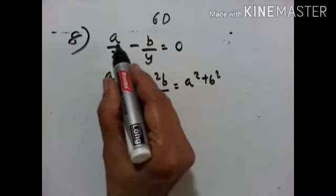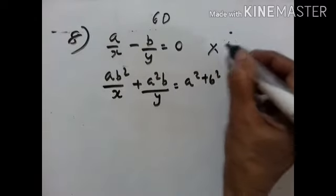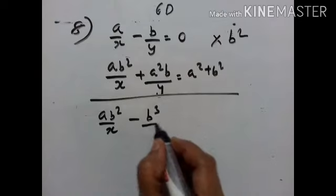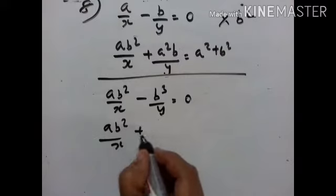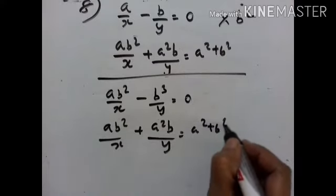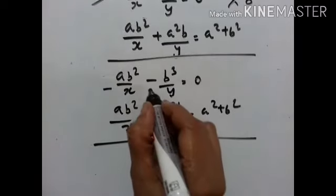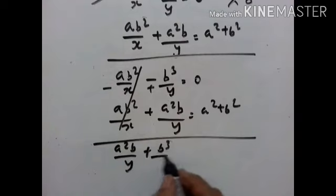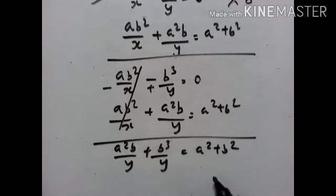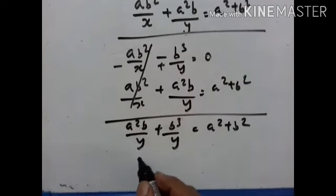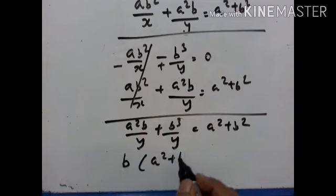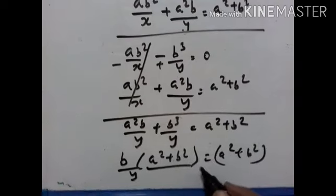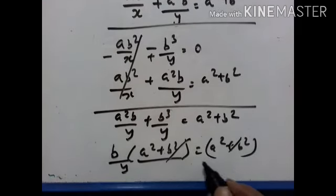8th problem. The equations involve a upon x and b squared upon x. Let us multiply the first equation by b squared: a b squared upon x minus b cubed upon y equals 0, and a b squared upon x plus a squared b upon y equals a squared plus b squared. Subtracting: a squared b upon y plus b cubed upon y equals a squared plus b squared. Taking b common: b times (a squared plus b squared) upon y equals a squared plus b squared.